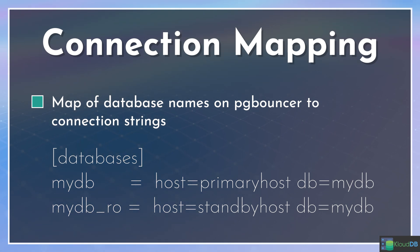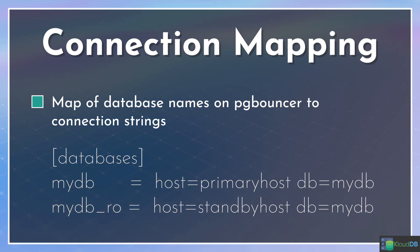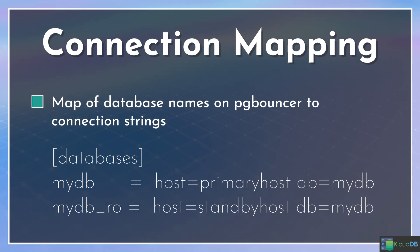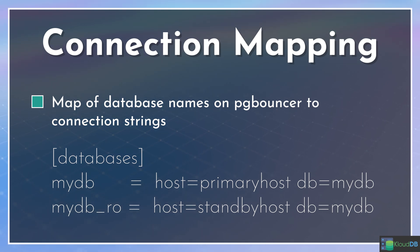That's how you can enable routing of read queries to read replicas via pgbouncer. Some people also plug in HAProxy — if you have multiple replicas, you can load balance via HAProxy in between.